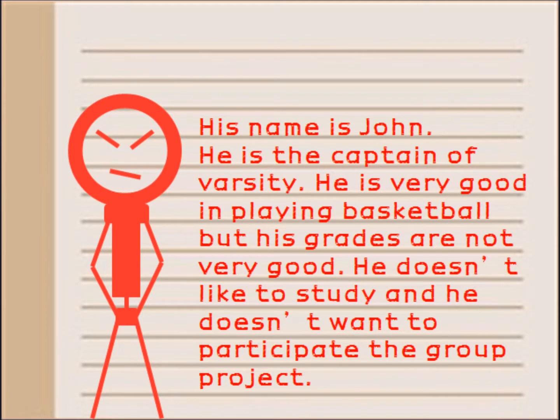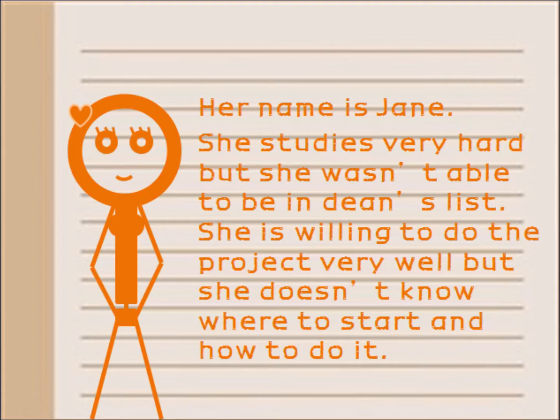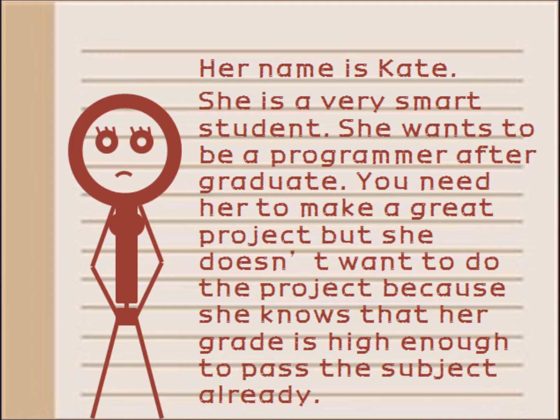His name is John. He is the captain of varsity. He is very good at basketball but his grades are not very good. He doesn't like to study and doesn't want to participate in the group project. Her name is Jane. She studies very hard but wasn't able to make Dean's List. She is willing to do the project well but doesn't know where to start or how to do it. Her name is Kate. She is a very smart student who wants to be a programmer after graduation. You need her to make a great project, but she doesn't want to do it because her grade is already high enough to pass. You need to do something to get her back to work.